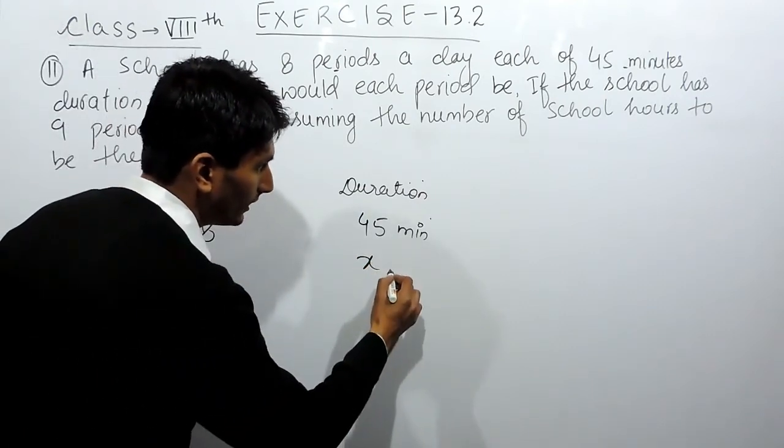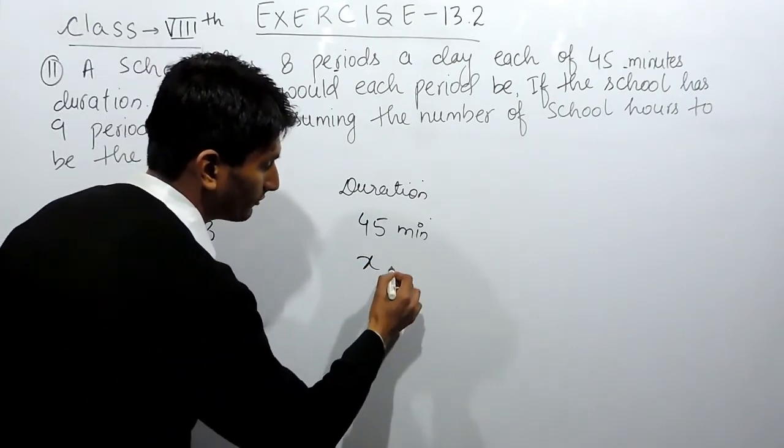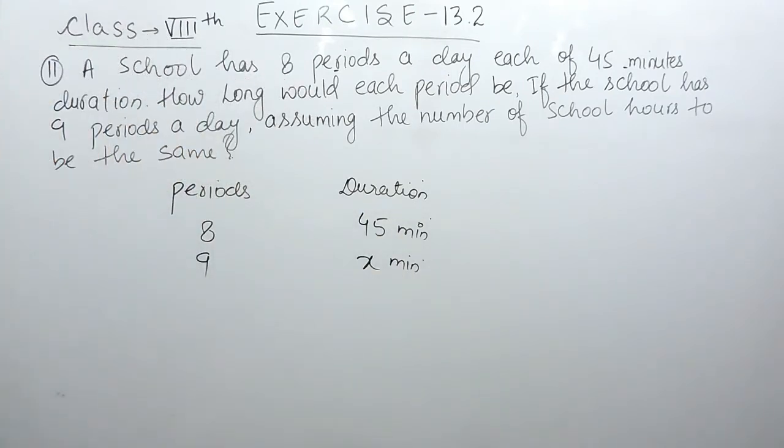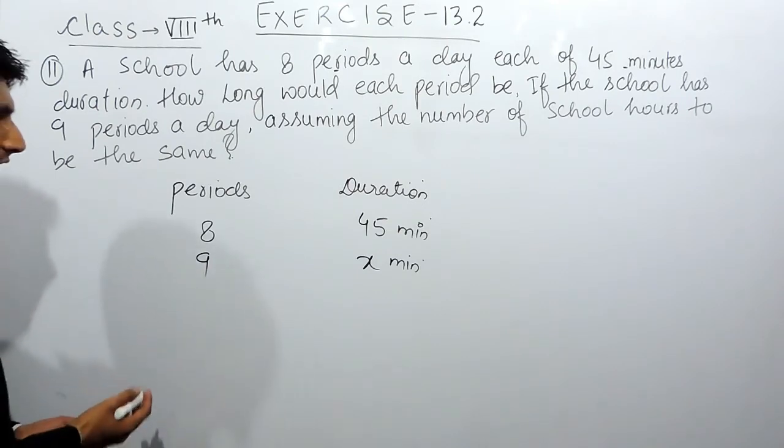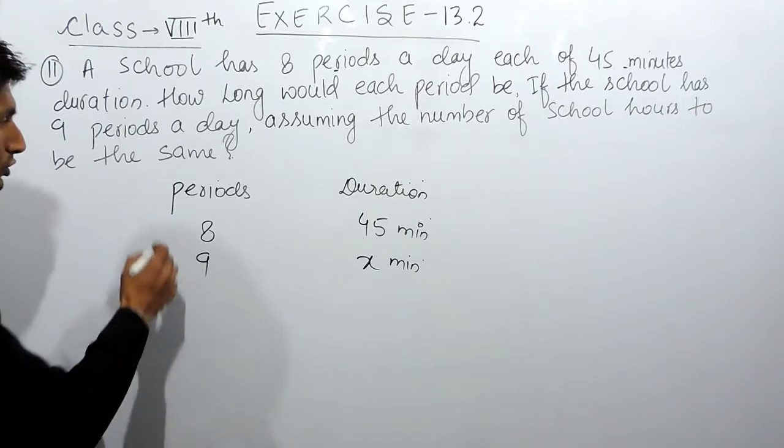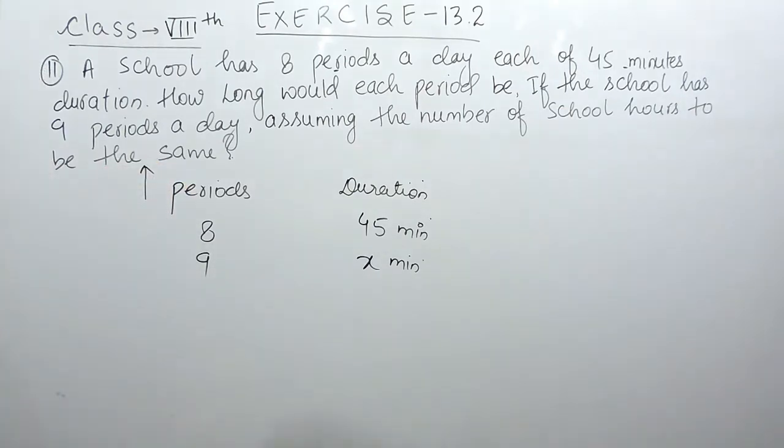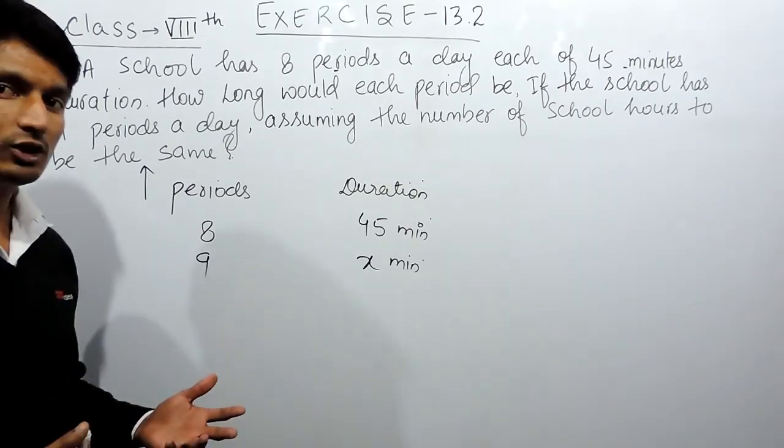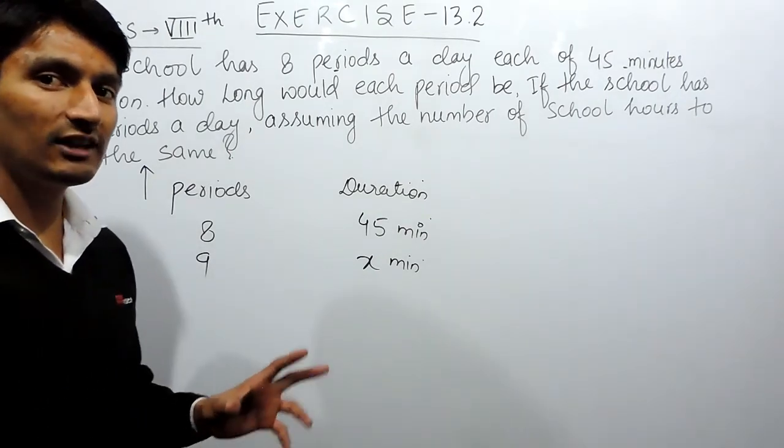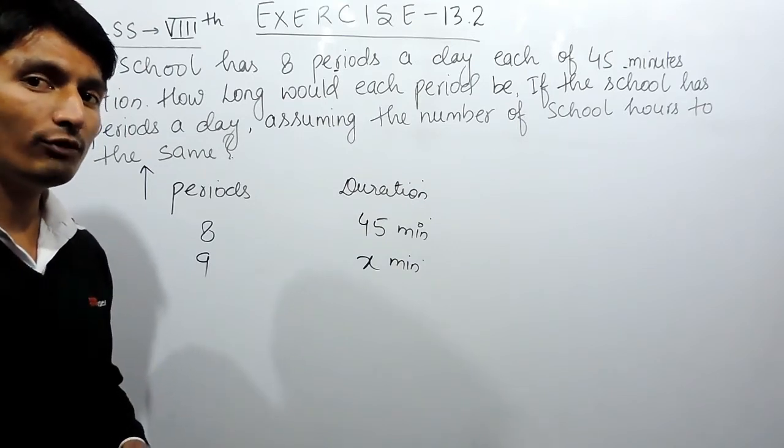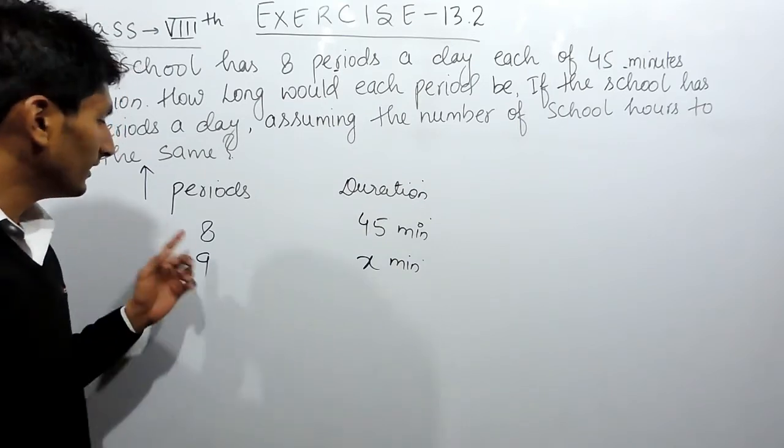These are the parameters. Now let's check whether this is a case of direct proportion or indirect proportion. Obviously, in a school, if you have more number of periods, the time given to each period will be less.